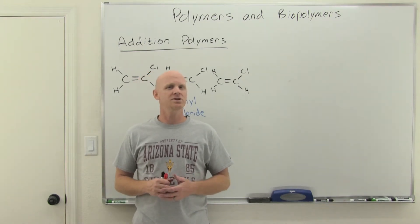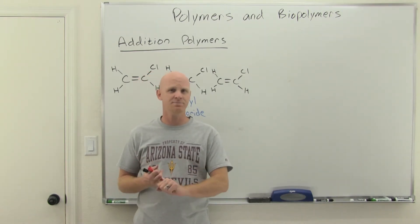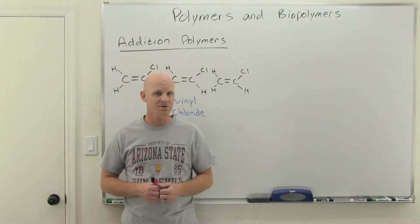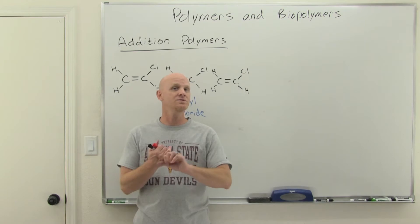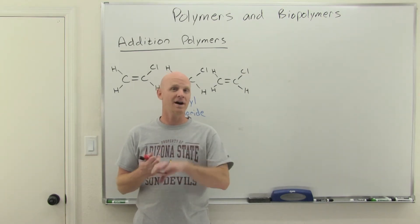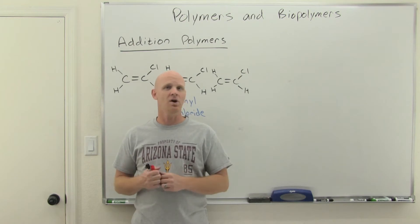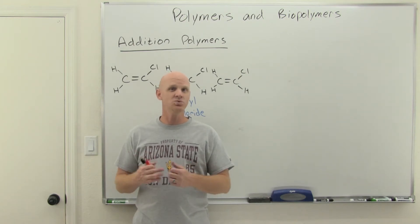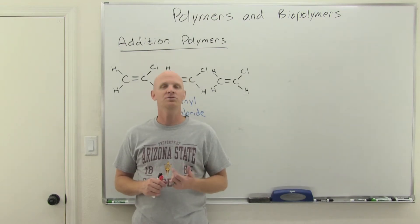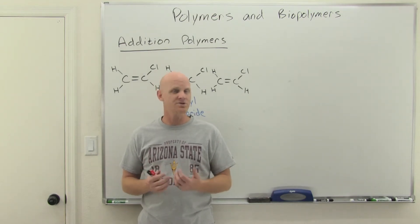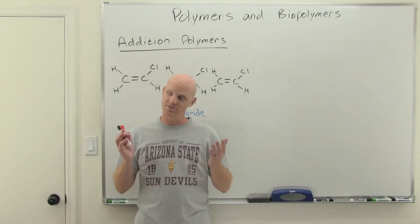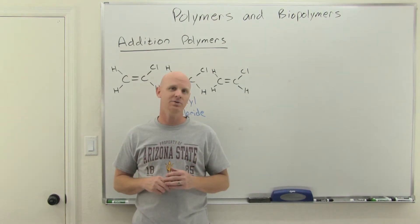Polymers come in two major classes: addition polymers and condensation polymers. We'll also talk about three biopolymers present in your body. We'll talk about proteins, which are a polymer of amino acids; carbohydrates, which may exist as polymers of individual monomer — monosaccharide units; and nucleic acids, which are also polymers, like DNA and RNA, inside your body and every living creature.